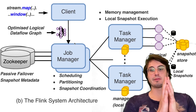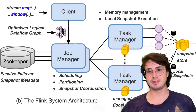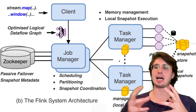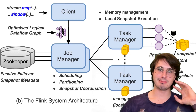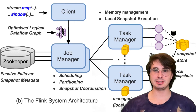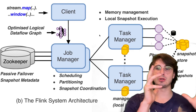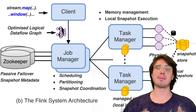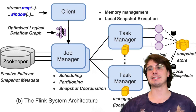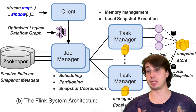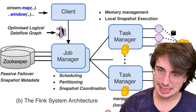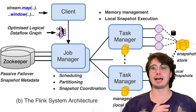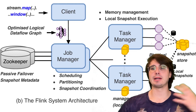Another thing to think about is state time to live (TTL), which is essential for preventing unbounded state growth. Configure TTL based on your business requirements, considering both the semantic correctness of your application and resource constraints. Your cleanup strategy should balance between eager memory cleanup for memory efficiency and lazy cleanup for reduced computational overhead, since cleanup does require compute. If you're running the RocksDB backend, compaction-based cleanup is often the most efficient approach, compacting long-lived state into compressed archive-type storage.